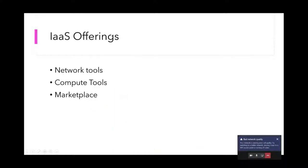Looking at the Azure cloud's IaaS offerings: it has all the networking tools including VNets with network security groups and routing tables. It has compute tools, so whether you're running a Kubernetes cluster or a VM, there are very many options. There's also a marketplace where pre-built IaaS offerings are available for you to use.